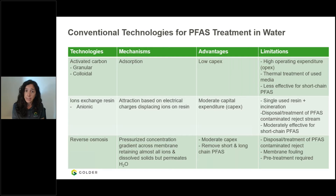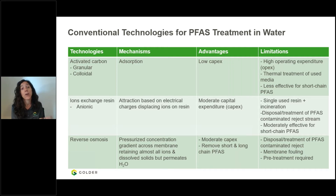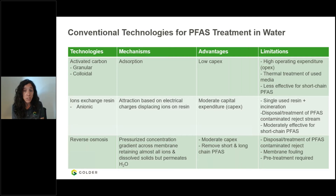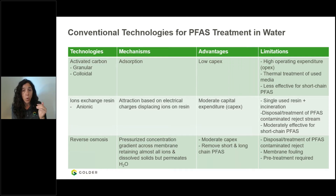The second technology is ion exchange resin. These are mainly ionic resins, and the mechanism is an attraction based on the electrical charge of the contaminant, which replaces the ion on the resin. It has a moderate CAPEX, but once the resin is contaminated with PFAS, if used as single-use, you must incinerate the resin at high cost, or treat the PFAS-contaminated reject stream. It's moderately effective for short-chain PFAS.